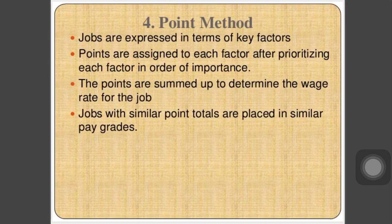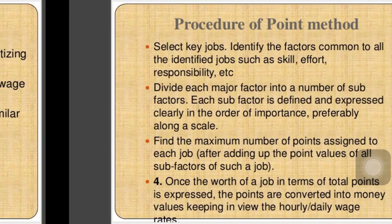The fourth and last method is the point method. Jobs are evaluated in terms of key factors. Points are assigned to each factor after prioritizing them in order of importance. The points are summed up to determine the wage rate for that job. Jobs with similar point totals are placed into similar pay grades.